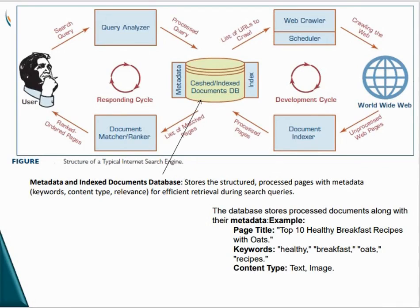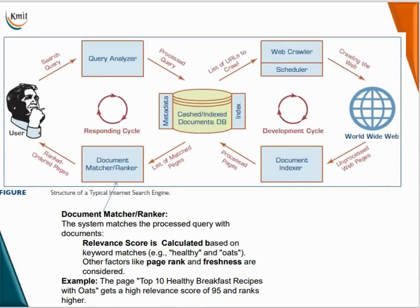The indexed document database stores structured and processed pages with metadata, including page title, keywords, and content type. This indexed document database then provides the list of matched pages to the document matcher and ranker.